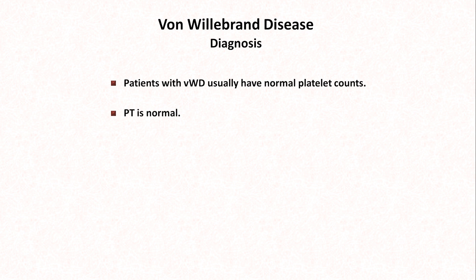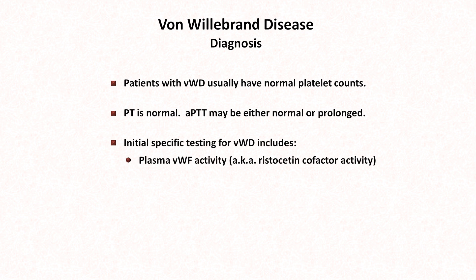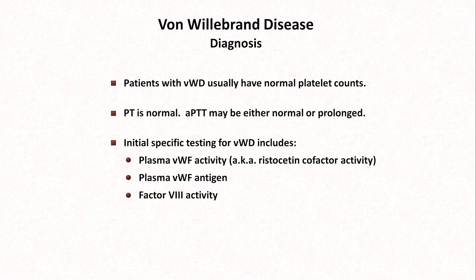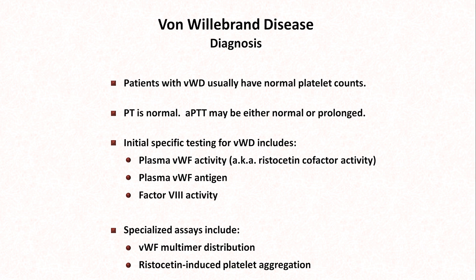Regarding the laboratory diagnosis of von Willebrand disease, patients usually have normal platelet counts. The PT should be normal, while the PTT may be either normal or prolonged. There are three specific tests: plasma von Willebrand factor activity, also known as the Ristocetin cofactor activity — Ristocetin is an antibiotic no longer used clinically due to its prominent side effect of causing thrombocytopenia and platelet aggregation by inducing von Willebrand factor to bind to GP1b, an effect which is diminished in patients with von Willebrand disease. Another test is plasma von Willebrand factor antigen and factor VIII activity. Additional specialized assays to identify the subtype include the von Willebrand factor multimer distribution and Ristocetin-induced platelet aggregation, and by the time these latter tests are being considered, the patient has usually already been referred to hematology.